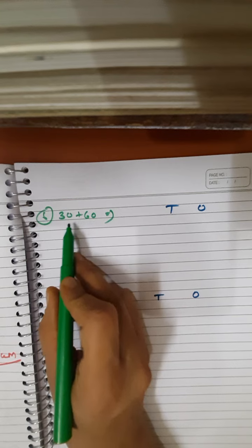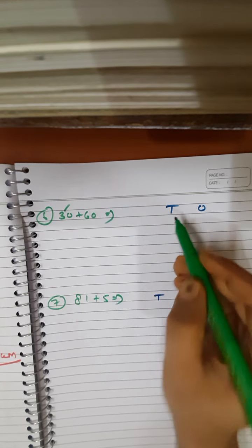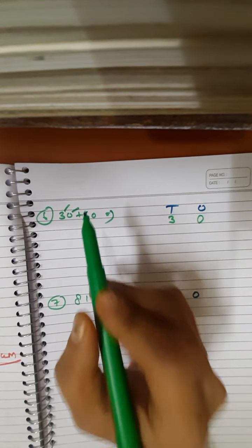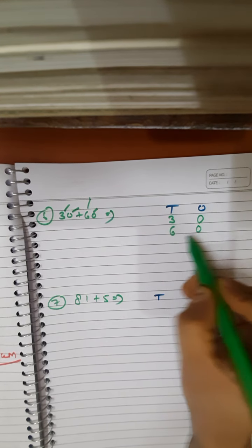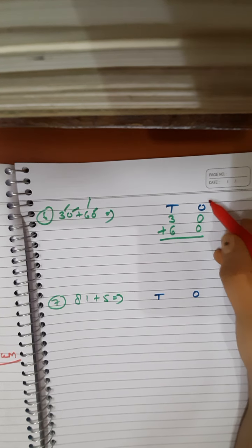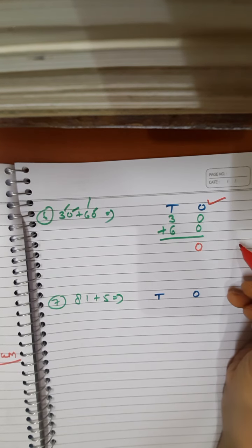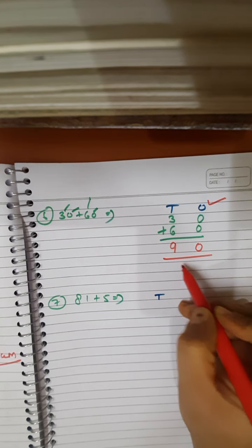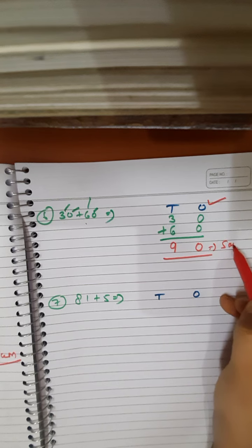The next example is 30 plus 60. Place the numbers: 3 goes to the 10s place and 0 goes to the 1s place. For the second number, 6 goes to the 10s place and 0 goes to the 1s place. Add the 1s place: 0 plus 0 gives 0. Then add the 10s place: 3 plus 6 equals 9. So the sum of 30 plus 60 is 90.